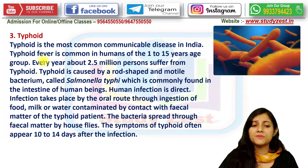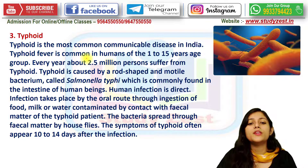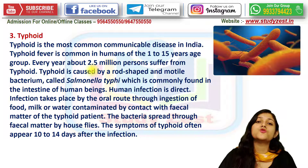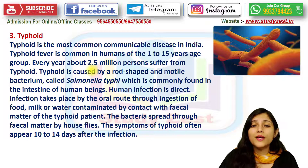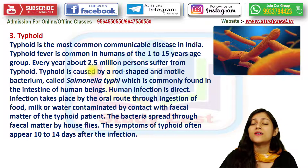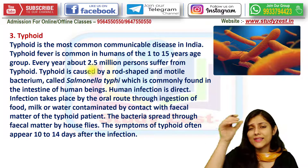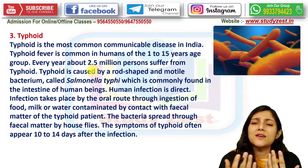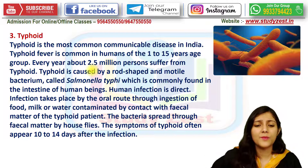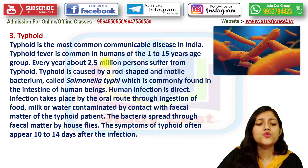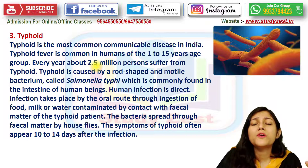Typhoid fever is most common in humans of the 1 to 15 years age group, though it is not that people above 15 cannot suffer from it. Surveys show that most typhoid patients are in the 1 to 15 year age range. Every year approximately 2.5 million persons suffer from typhoid.